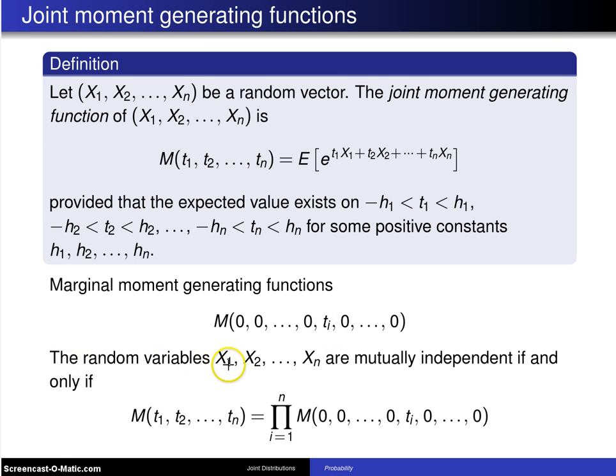And the random variables X₁ up to Xₙ are mutually independent if and only if the joint moment generating function can be written as the product of the marginal moment generating functions.